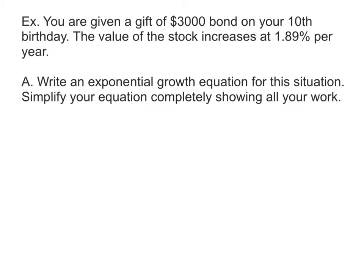Alright, let's try another one. You're given a gift of $3,000 bond on your 10th birthday. The value of stock increases at 1.89% per year. Part A, write an exponential growth equation for this situation. Simplify your equation, completely showing all your work. Okay, so we need our formula. So our formula, remember, is F of T is equal to A parentheses 1 plus R raised to the T power. We're going to plug in what we know. So now I need to go with, I need my A, I need my R, and I need my T.